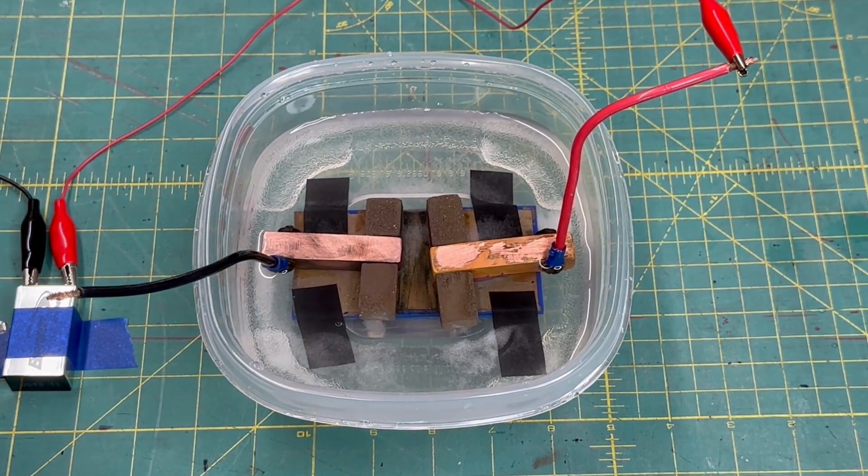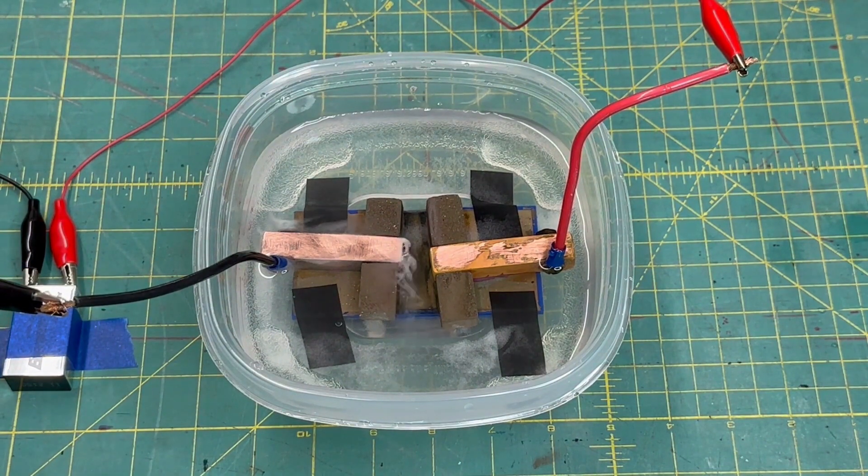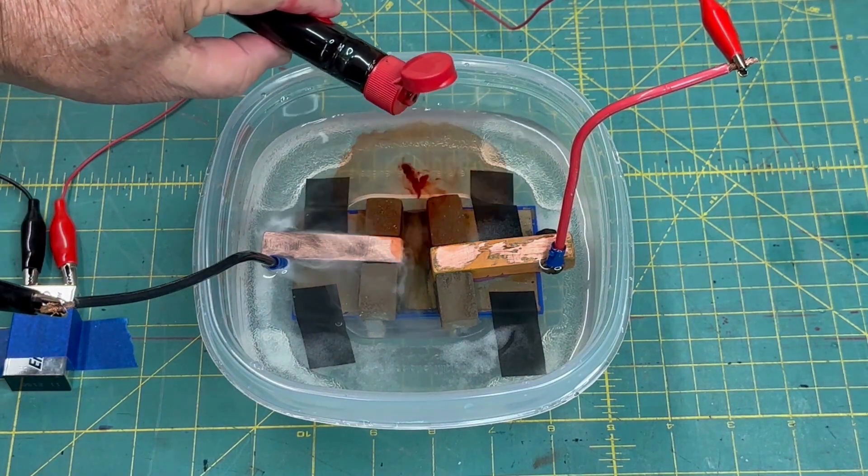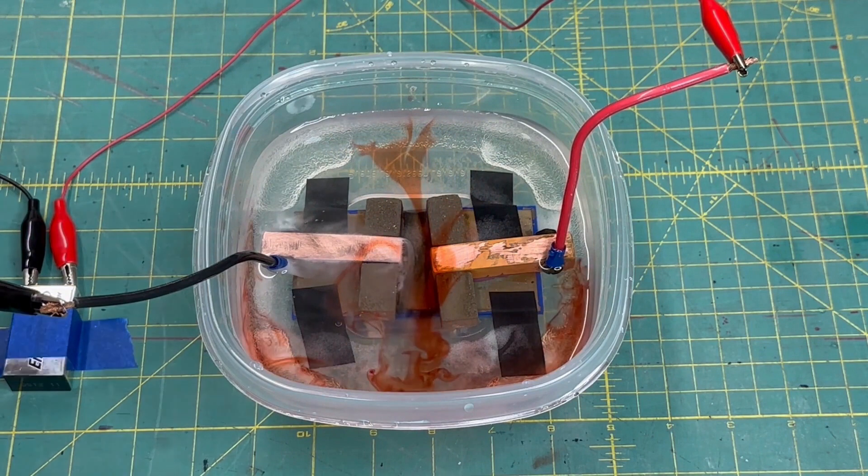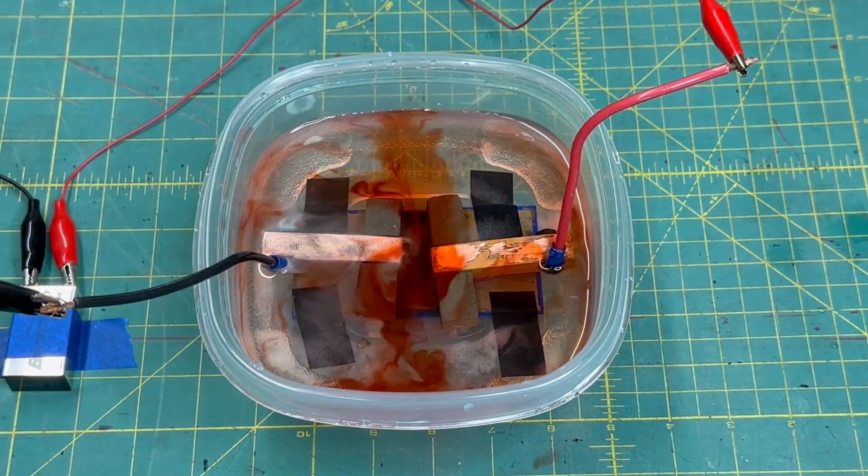Okay, now we're going to connect the battery. You can see it's starting to go there. Put a little drop of food coloring in. See, now it's really, really going.